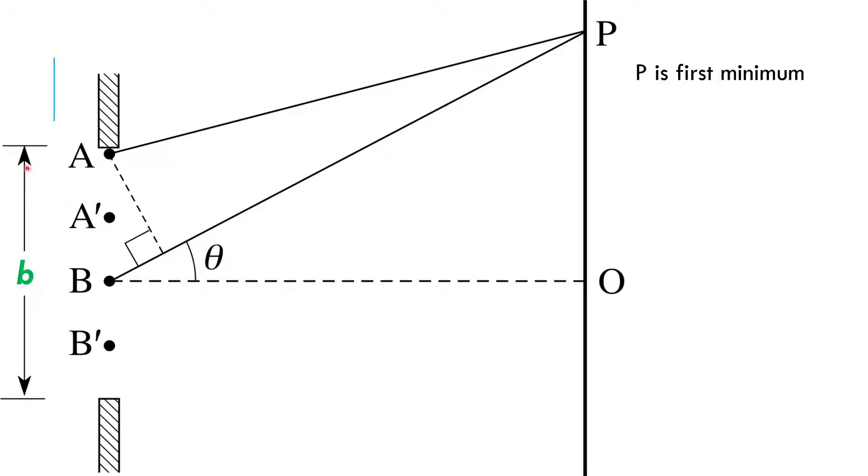Some variables to introduce: the width of the slit in single slit interference we call little b. Little b is going to be the size of the opening traditionally is what we're going to use. So, of course, when we create our little right triangle here to look at a path difference, we're dealing with a b over 2 hypotenuse.